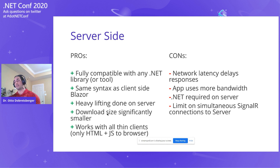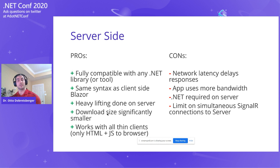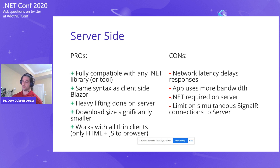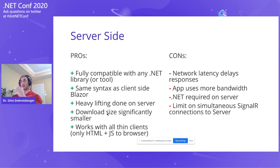That depends on the scalability of your app. If you host in Microsoft Azure, every hosting model has a different limitation on how many parallel connections it can serve through SignalR — ranging from as low as 20 all the way up to 100 million. That should be enough for most applications, but it also increases the cost of hosting.